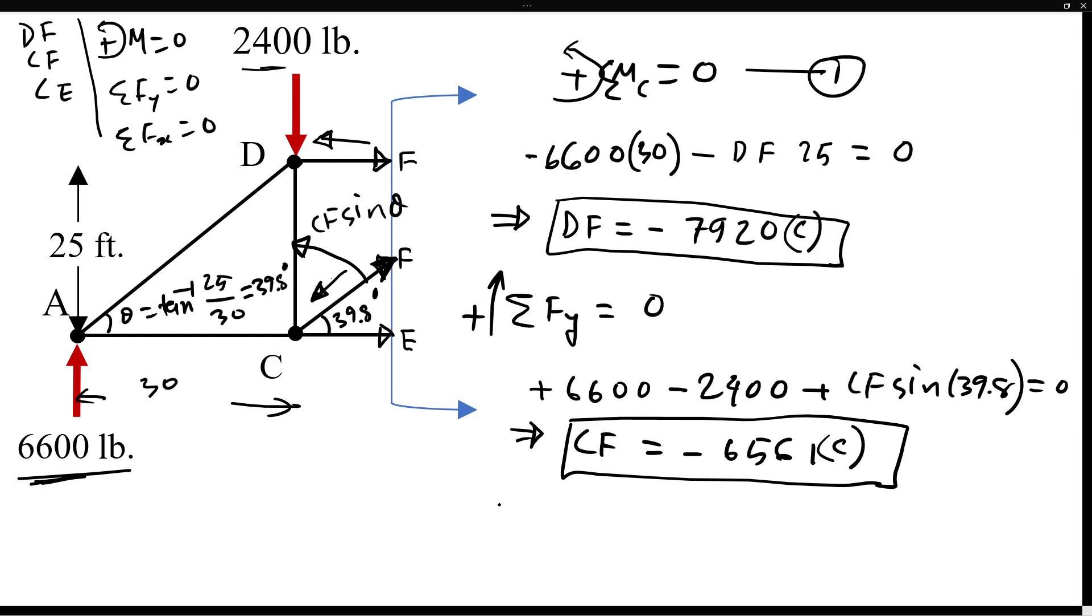Now we can write our next equation, which is summation of Fx equals zero. The right direction force positive, so we have here plus CE, then plus DF, plus CF cosine 39.8. Everything sums to zero.